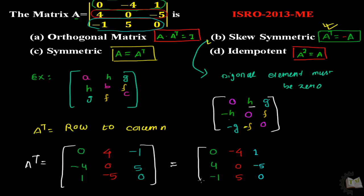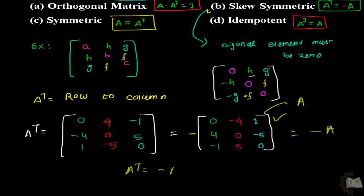Now compare this transpose of matrix with the negative from outside to the original matrix. The first row is 0, -4, -1. Second row says 4, 0, -5. Third row is -1, 5, 0. What did you get? You get this is the matrix A. That means A transpose equals negative A.